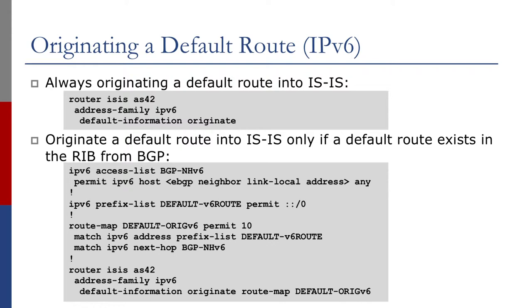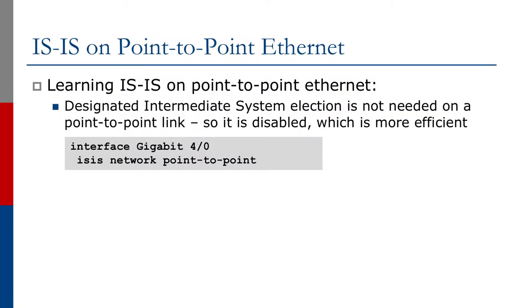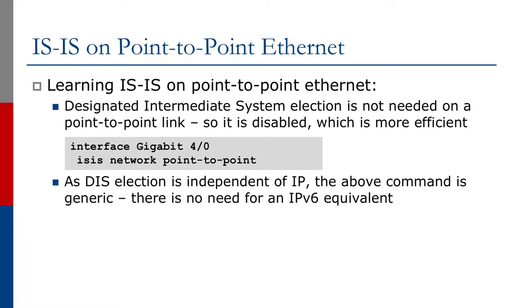Running IS-IS on a point-to-point Ethernet link also gives access to an optimization: we don't need a DIS on a point-to-point link, so what we can do is set up the Ethernet as a point-to-point link. Ethernet is widely used now for medium and long-haul point-to-point links, so we can save a little bit of resource by not having a DIS there. That's done by going to the Ethernet interface and doing 'isis network point-to-point'. Both ends of the link need to have this configuration set up.